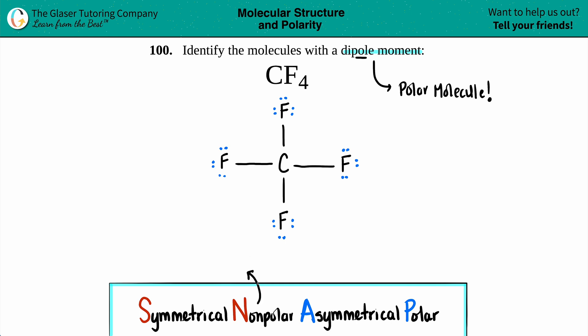If you have a non-polar molecule, you have no pole, you have no dipole. Non-polar means no dipole. Only when you have an asymmetrical molecule, there's that unequal distribution and that's polar. So you will have a dipole.